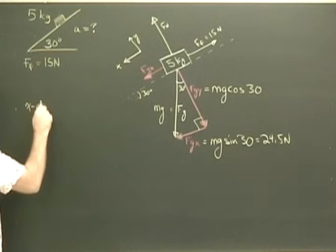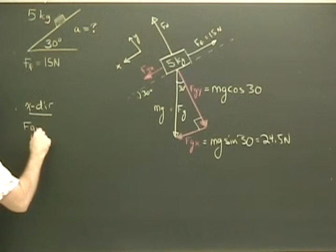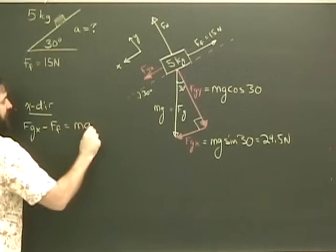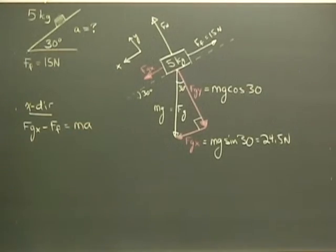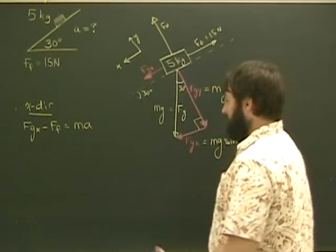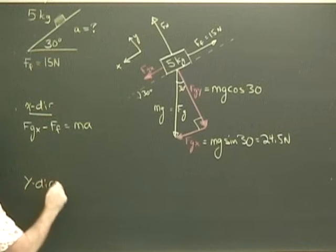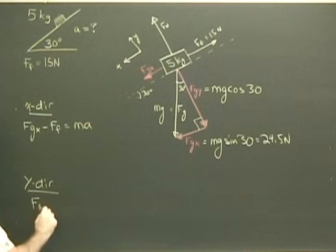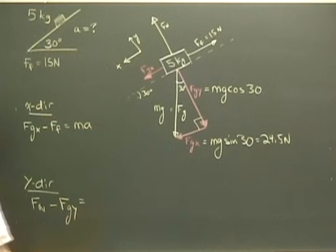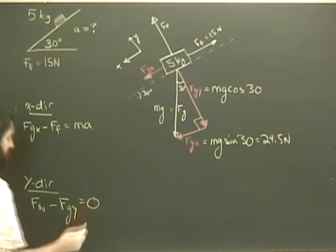So in the x-direction, I've got Fgx minus Ff equals Ma. And because my teacher told me I always do the x and the y-direction, I'm also going to do the y-direction even though I don't know why I'm doing it. Y-direction, I've got the normal force in the positive y-direction. Fgy is in the negative y-direction and the acceleration is in the x-direction, so by definition that is equal to zero.